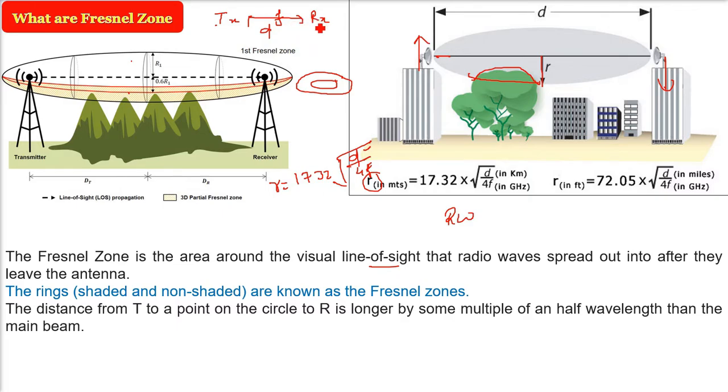So the distance from this transmitter to a point on the circle to receiver is longer by some multiple often half wavelength than the main beam. Why I am saying that? Because whenever you have an obstruction, the path will not be only straight.